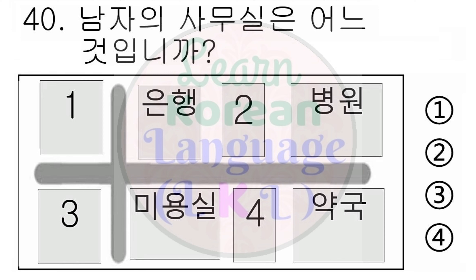다음은 25번부터 29번까지 문제입니다. 다음을 듣고 그림에 알맞은 답을 고르십시오. 보기 문제. 이것은 무엇입니까? 1. 종이입니다. 2. 상자입니다. 3. 가위입니다. 4. 저울입니다. 정답은 3번입니다.